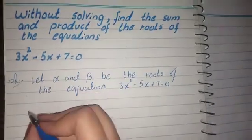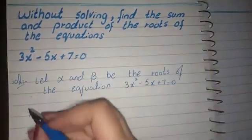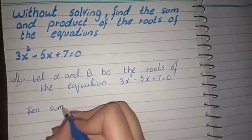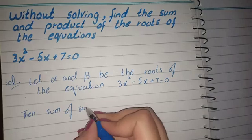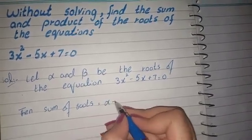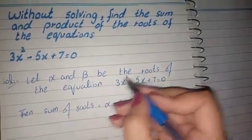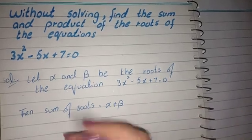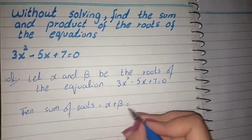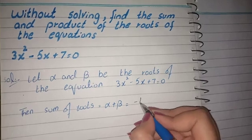Then, sum of roots: alpha plus beta. Because alpha and beta are the roots of the equation, the sum of roots is minus b by a.